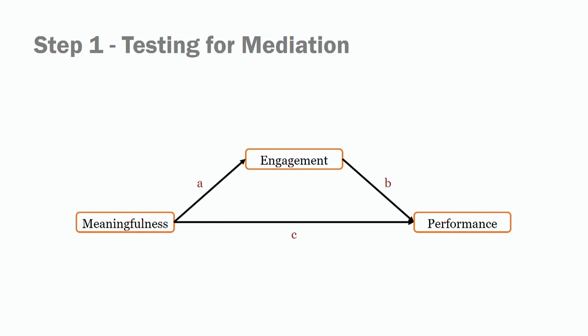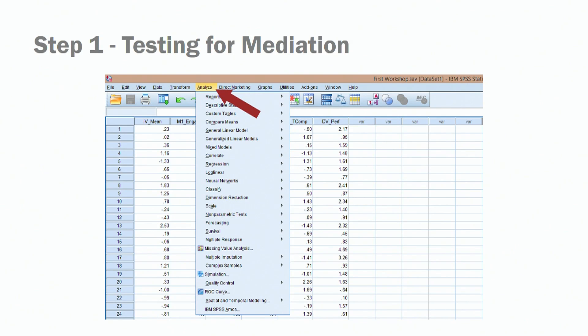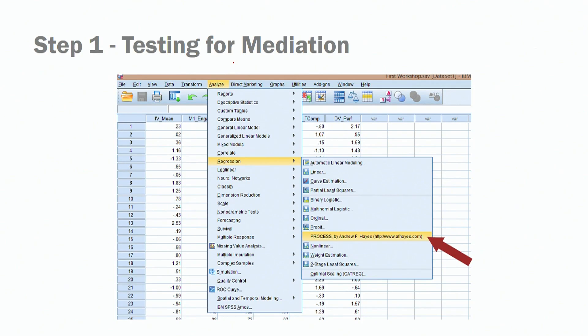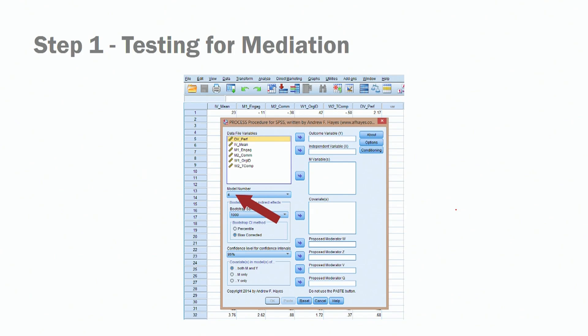The first step is to look for and test the mediation model. Go to Process — to get there, go to Analyze, then Regression, then click on Process. Once you're there, select the correct model — it's model number four because we are running a mediation model.